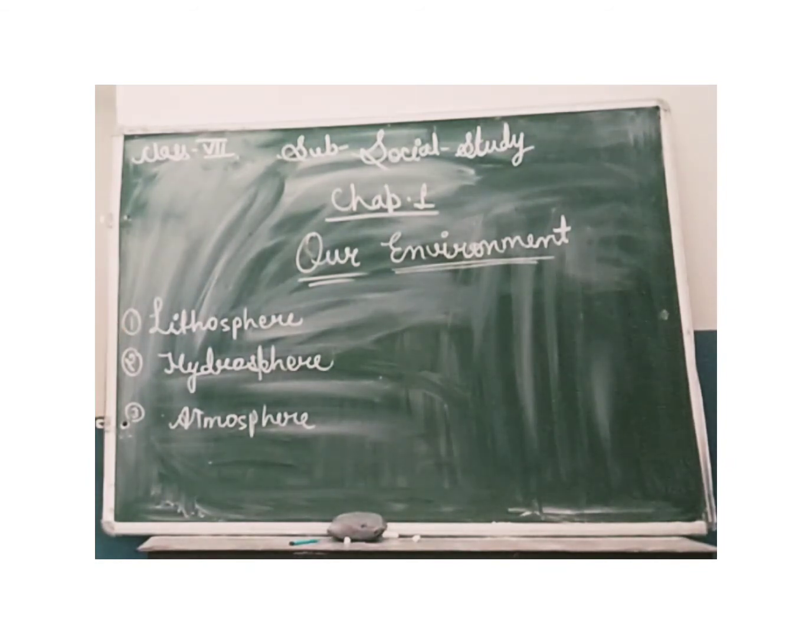Understand everyone, what is lithosphere? The solid first layer of the earth's surface is called lithosphere. Hydrosphere, the part of the earth covered in water is called the hydrosphere. And the atmosphere, the thick layer of air surrounding the earth is called the atmosphere.